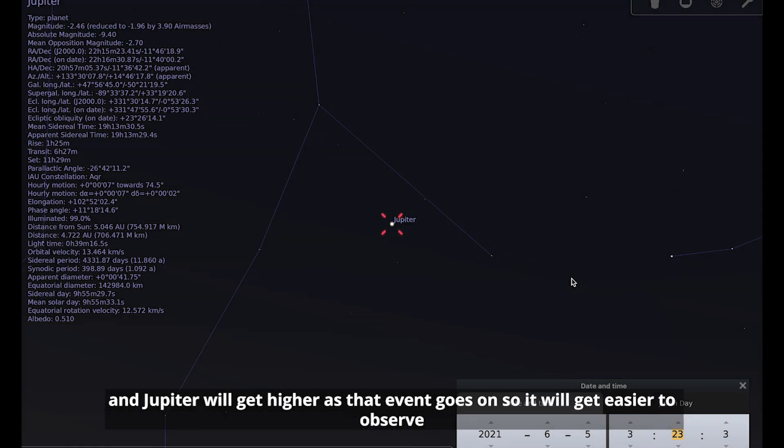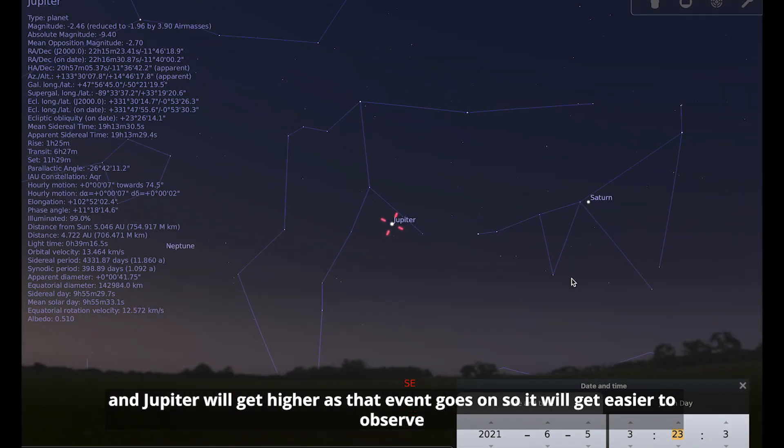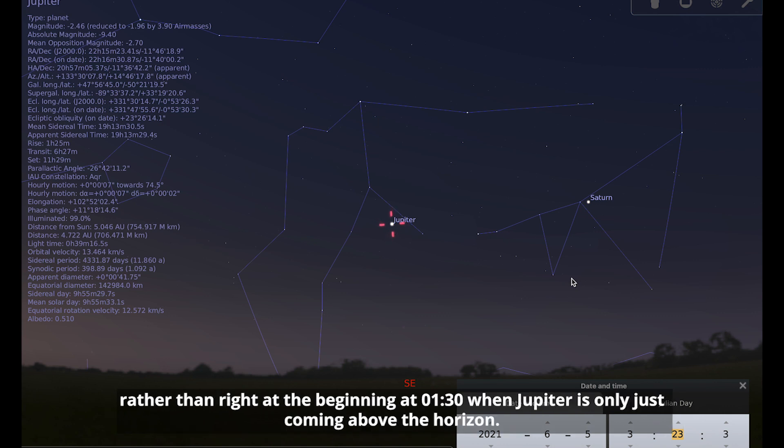So that is a nice little event to have a look at with your small telescope if you have one. And Jupiter will get higher as that event goes on, so it will get easier to observe rather than right at the beginning when Jupiter's only just coming above the horizon.